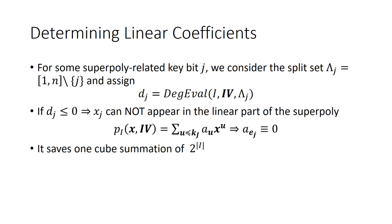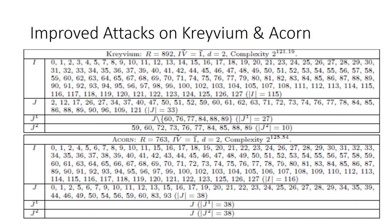In ordinary key recovery attack for superpoly-related key index j, we consider the split set lambda j and call the modified degree evaluation algorithm. We can evaluate its degree dj. If dj is larger than zero, we know that the corresponding key cannot appear in the linear part of the superpoly, so the coefficient of xj is zero. Therefore, we do not need to compute such a coefficient through a cube summation, which diminishes the complexity by 2 to the i. In this way, we are able to improve the current best results on Trivium and Acorn by 1 and 13 rounds.